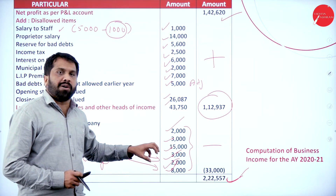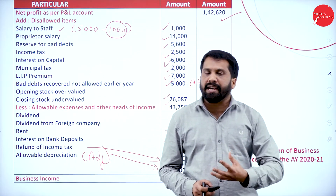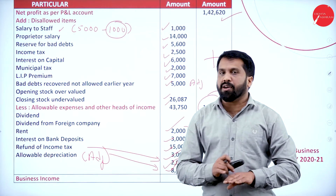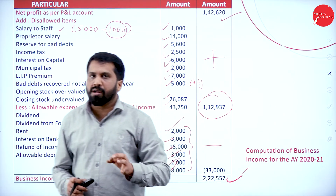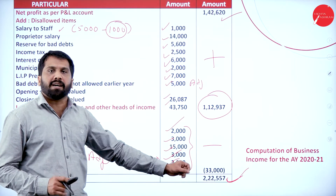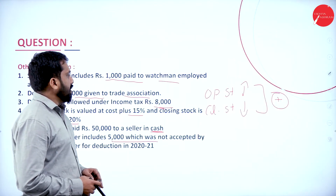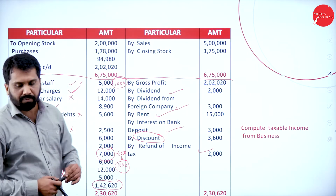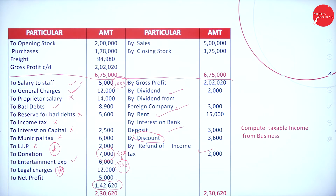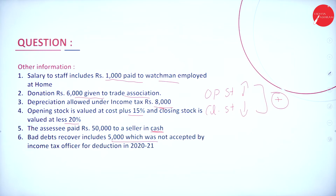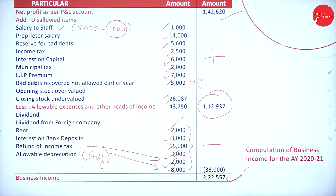This is the business income problem. Tax calculation is separate — here we only computed business income. Please go back and take a screenshot of the slides. This is the computation of taxable income from business, and these are the adjustments and the answer — condensed into a single slide.